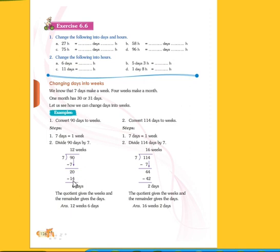7 twos is 14. We will subtract. 10 minus 4 is 6. We have borrowed, so 1 minus 1 is 0. Our answer is 6 days.